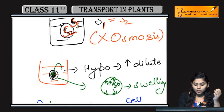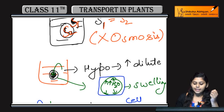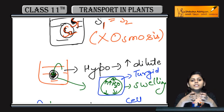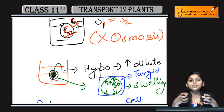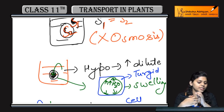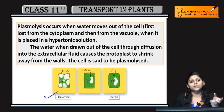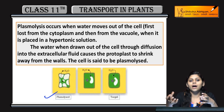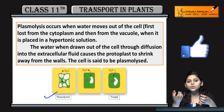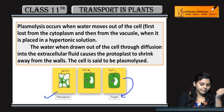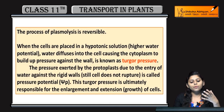Jab cell hypotonic solution mein daalte hain toh cell swell karta hai. Is condition mein cell turgid ho jata hai. Cell swell karta hai, but burst nahi karta — yeh hota hai turgid cell. Plasmolysis tab hoti hai jab protoplast shrink karta hai, yaani jab cell hypertonic solution mein hota hai. Hypotonic solution mein daalte hain toh cell turgid condition mein aa jata hai.